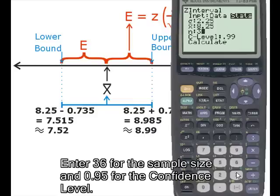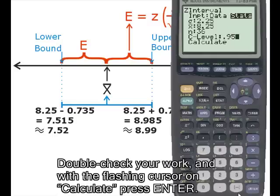Enter 36 for the sample size and 0.95 for the confidence level. Double check your work and with the flashing cursor on CALCULATE press ENTER.